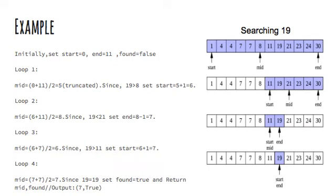So now in the loop 4 mid value will be 7 and since 19 is equal to 19 oh we found our variable. So variable found will be true and we will return the mid variable and the found variable.